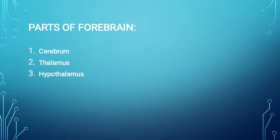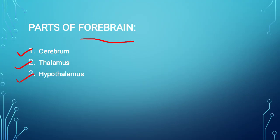First of all, we will discuss the parts of the forebrain. The forebrain also has three further parts: cerebrum, thalamus, and hypothalamus. Now we will see how these parts of the brain, which have further divisions, differ from each other in terms of functions and structure.